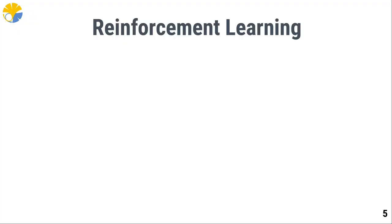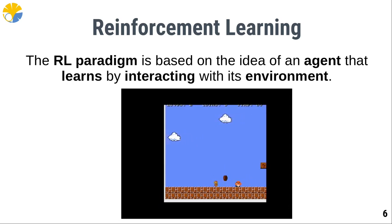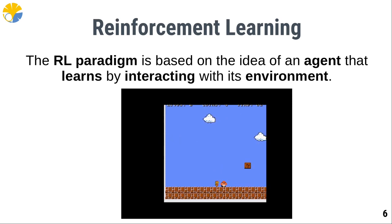Let's begin with a definition of reinforcement learning, or RL. The RL paradigm is based on the idea of an agent that learns by interacting with its environment. Like in this example in which Mario, the learning agent, interacts with his environment — a game level of Super Mario Bros. While he is randomly exploring the environment, he finds a Goomba or enemy twice. The first time Mario kills the Goomba, but the second time our agent gets killed by it.